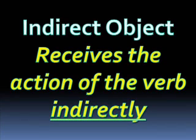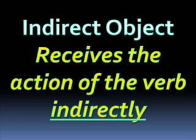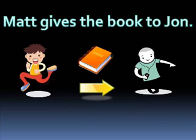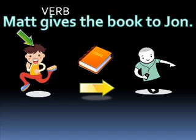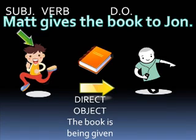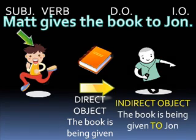As the name insinuates, an indirect object receives the action of the verb indirectly — it indicates to or for whom the action is completed. In the sentence 'Matt gives the book to John,' Matt is the subject performing the action of the verb 'to give.' The book is the direct object — it is directly receiving the action of the verb. John, though, is the indirect object because he indirectly receives the action of the verb. The book is given, but given to John.